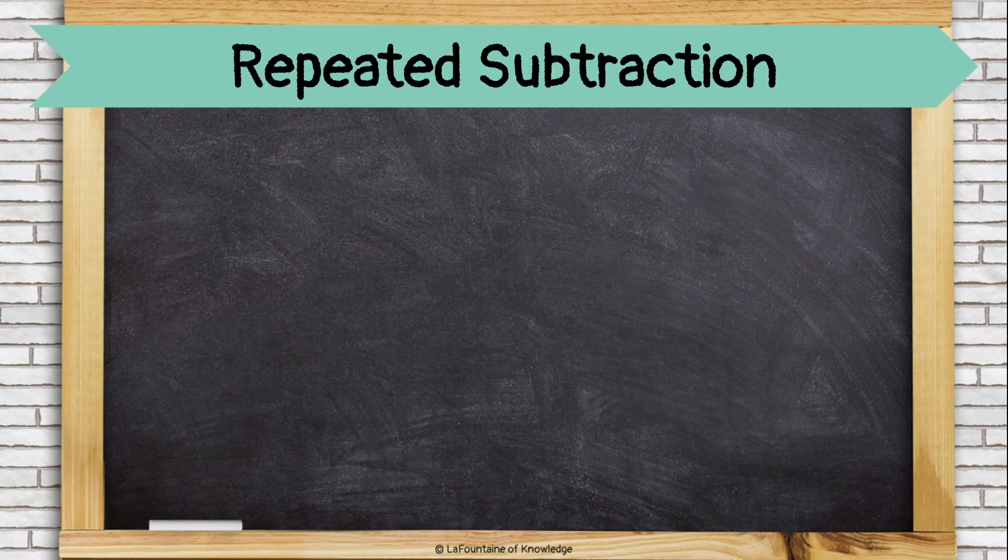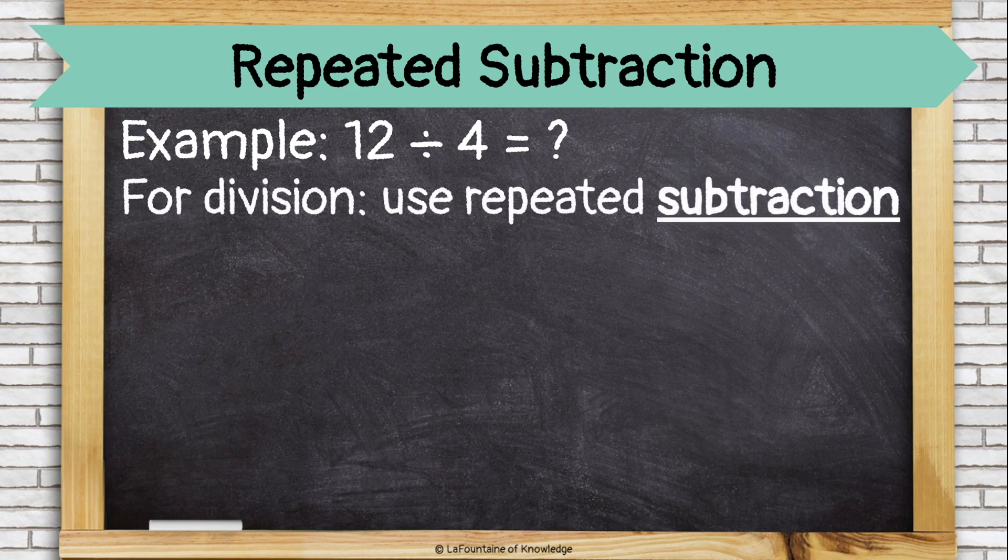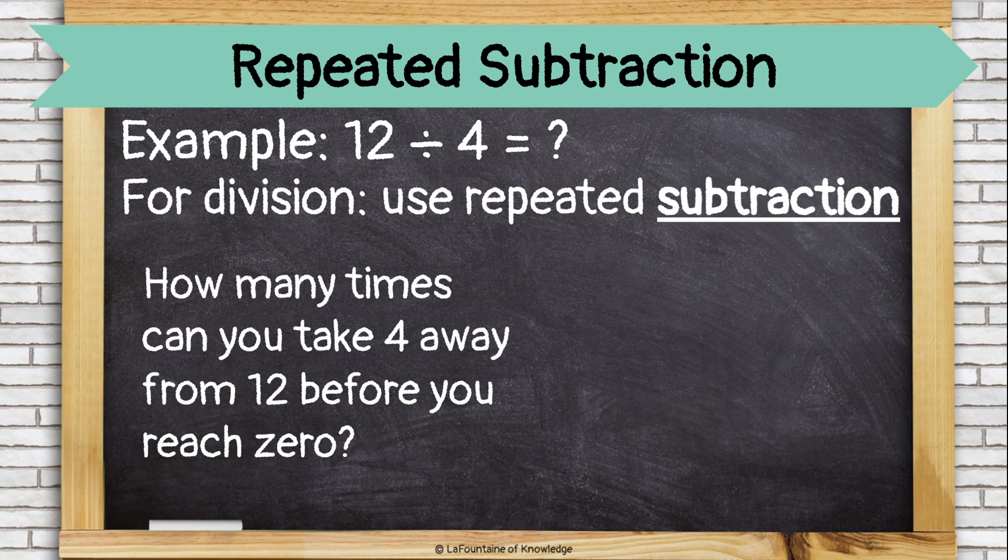Another strategy is repeated subtraction. Let's try solving twelve divided by four using repeated subtraction. How many times can you take four away from twelve before you reach zero? Let's find out. We'll start with twelve and we'll subtract four. That leaves eight.